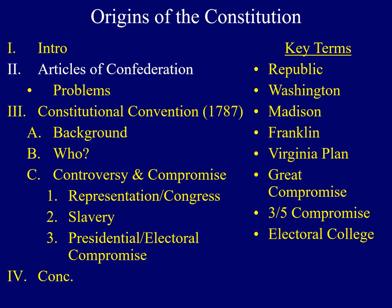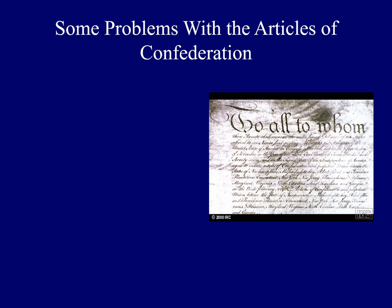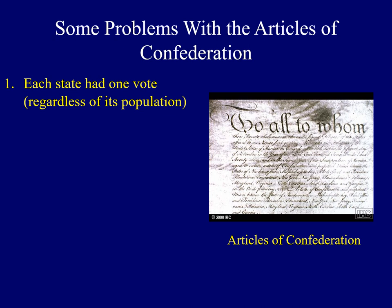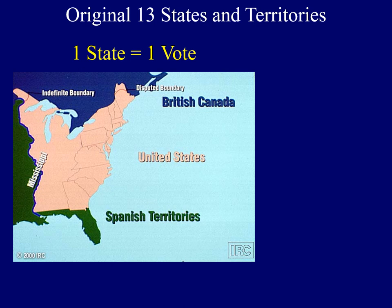We'll explore some of the problems associated with the Articles next. While the Articles provided enough unity for the colonies to defeat the mighty British Empire, there were some problems associated with it. First of all, each state when it came to passing legislation had one vote, regardless of its size or its population. Each individual state had a lot of power under the Articles — one state had one vote.